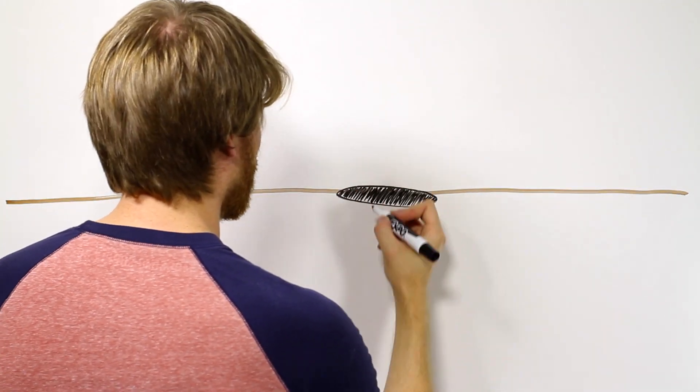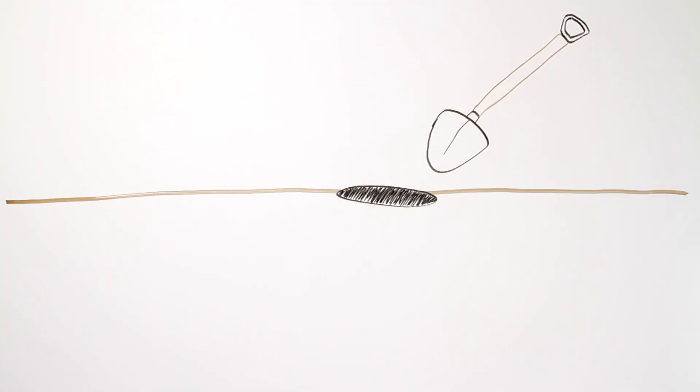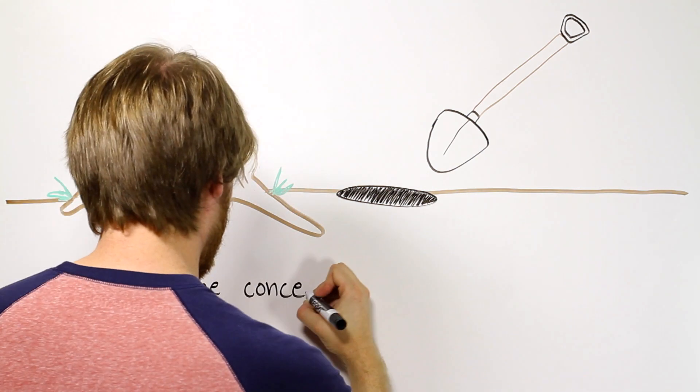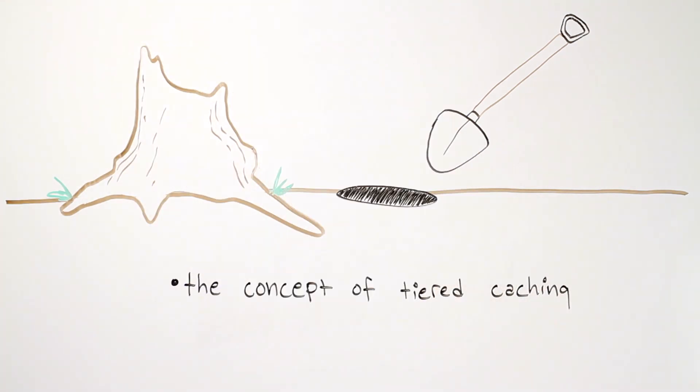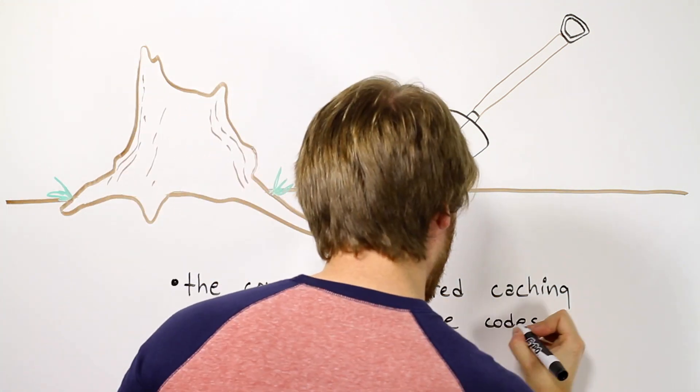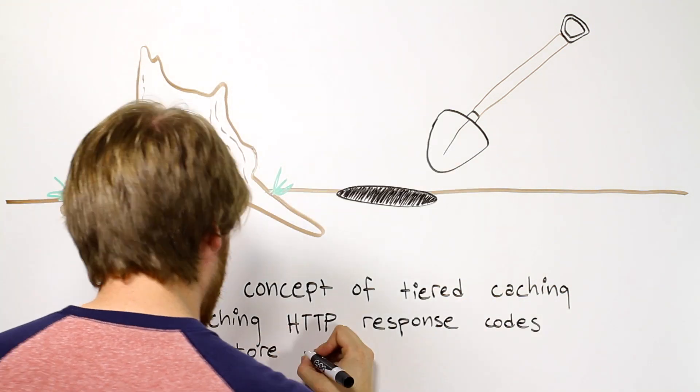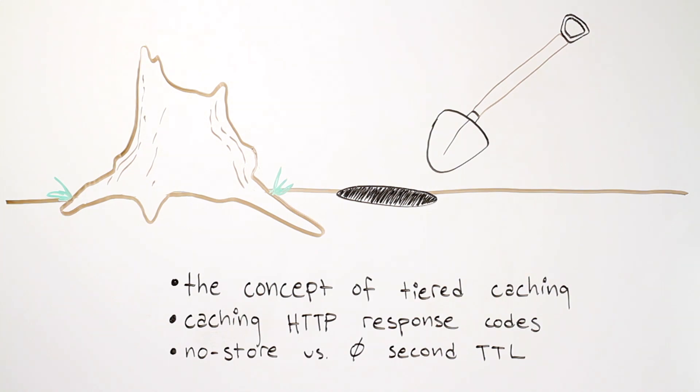Today, I want to dig a little deeper into some of the more advanced options available in caching and mention some best practices. Today we'll cover the concept of tiered caching, caching HTTP response codes, and no store versus zero second TTL.